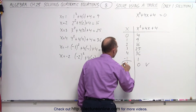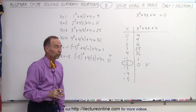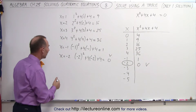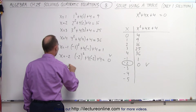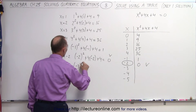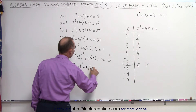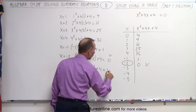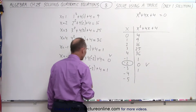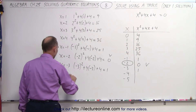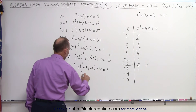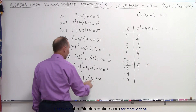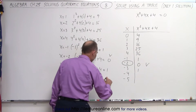That means x equals negative 2 is definitely one of the solutions. Now the question is, is there a second solution? Let's find out. x equals negative 3: that's negative 3 squared plus 4 times negative 3 plus 4, which is 9 minus 12 plus 4, equal to 1. How about x equals negative 4? That's negative 4 squared plus 4 times negative 4 plus 4, which gives us 16 minus 16 plus 4, equal to 4.